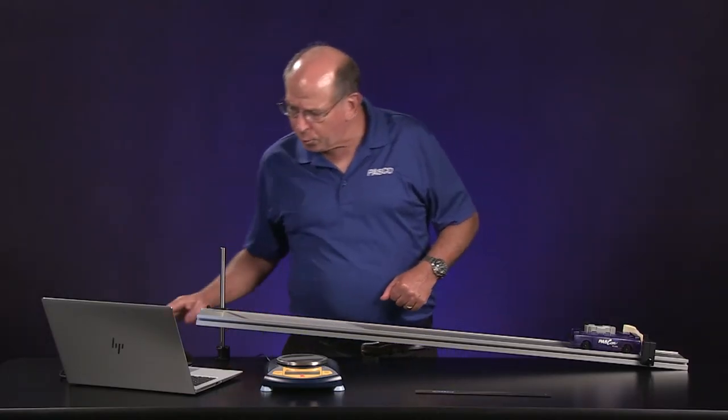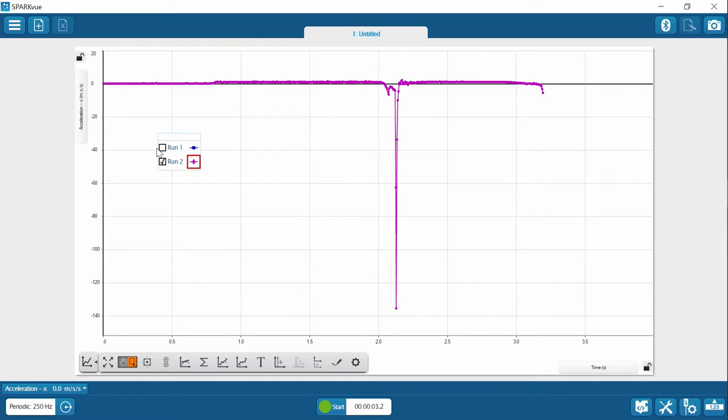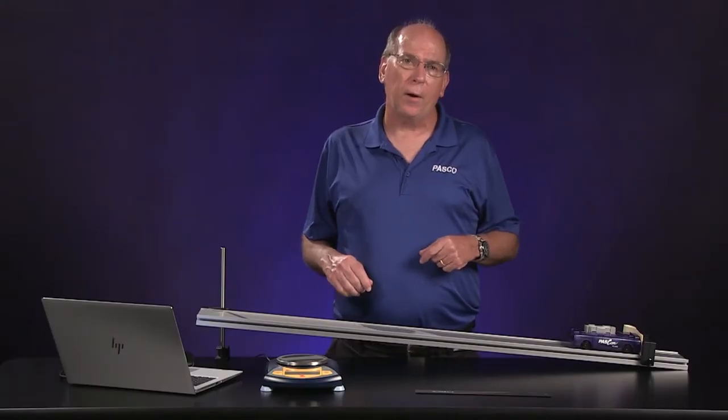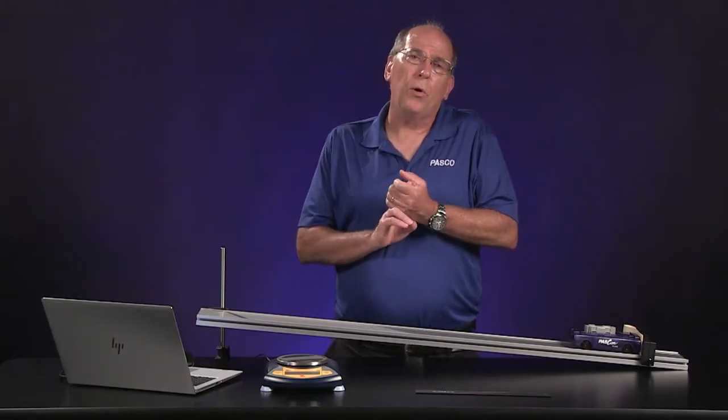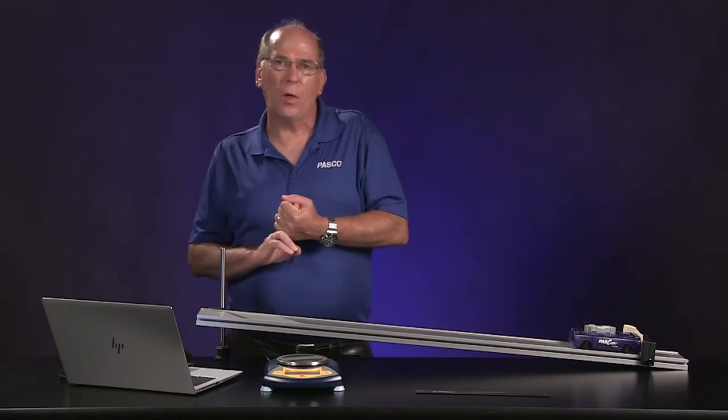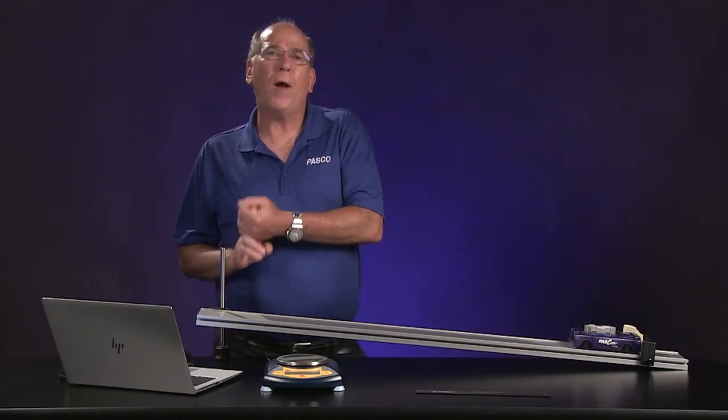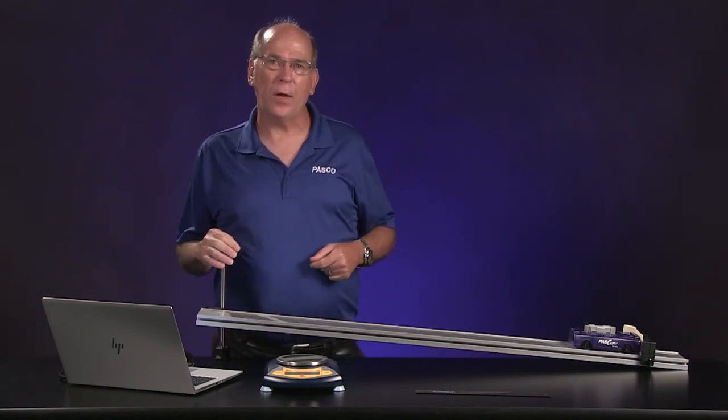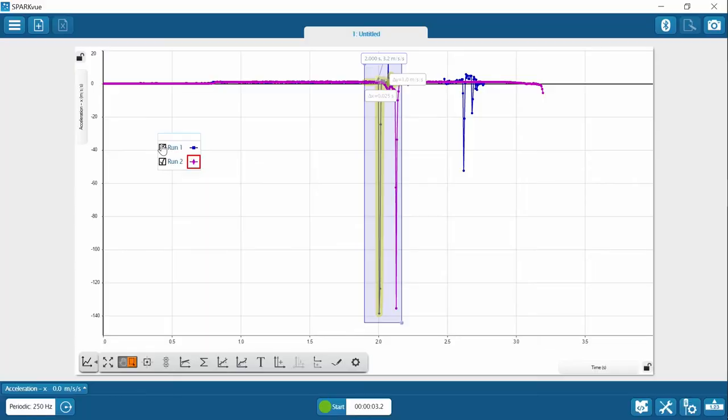So notice the presence of the crash cushion if I show the first collision here. Reduced the peak a little bit, but maybe we can do better. So you'll need to record the maximum magnitude of that acceleration and the crash duration in the data table. I showed you how to do it. You'll be doing it for yourself from now on.